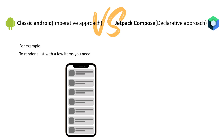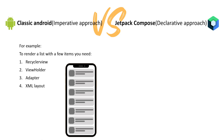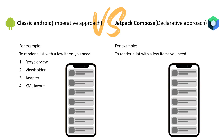Let me give you an example. To render a list with a few items in classical Android, you need a RecyclerView, a ViewHolder, an Adapter, and an XML layout — you must use all four parts to make it work. But with Jetpack Compose, you just need a LazyColumn. You pass a list of data into the LazyColumn and the list is live. Any other things you add are optional to improve the layout, not required.